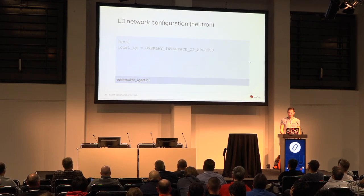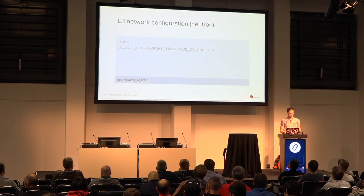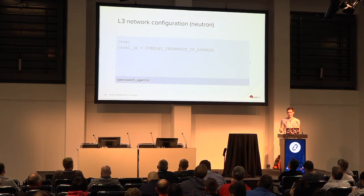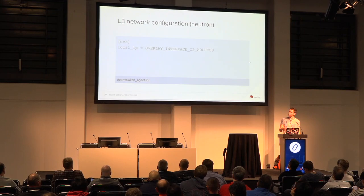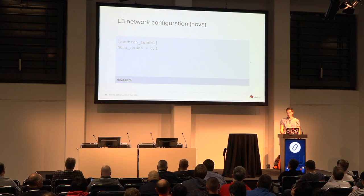L3 networks are a little bit different. Where L2 networks are typified by having multiple physnets on a host, L3 networks all have to go through the same endpoint — so you have to configure your endpoint IP. You can use multiple actual interfaces, but they'll have to be bonded together. That means the configuration from a Nova perspective is actually a lot simpler for the tunnel side of things. And again, we're aware that people do bonding and can spread this over multiple NUMA nodes, so we made this a list as well.